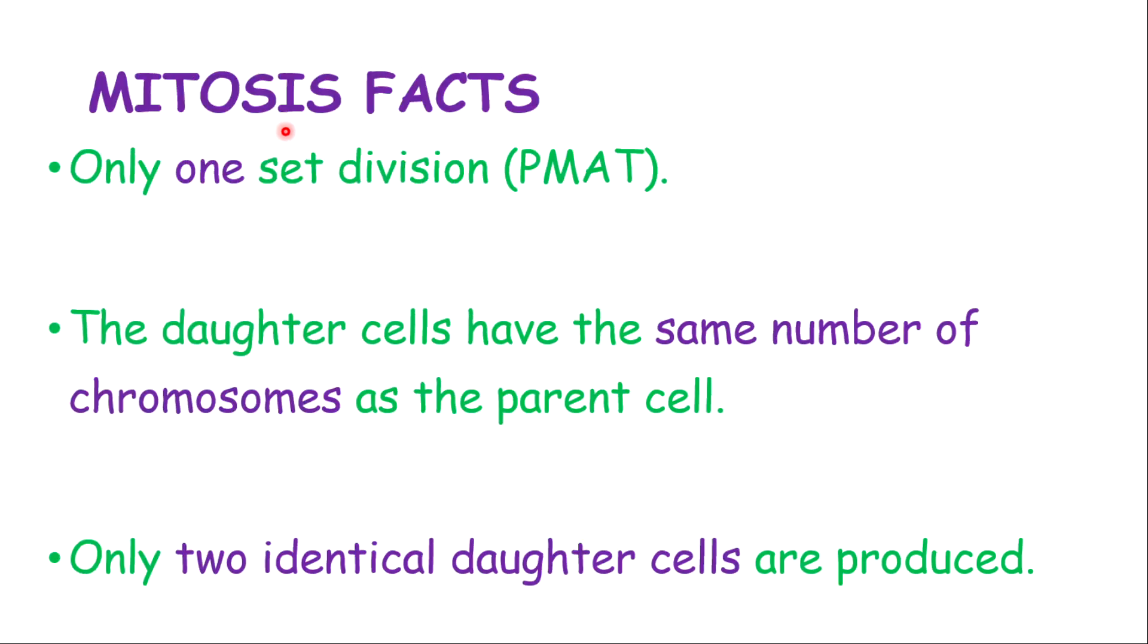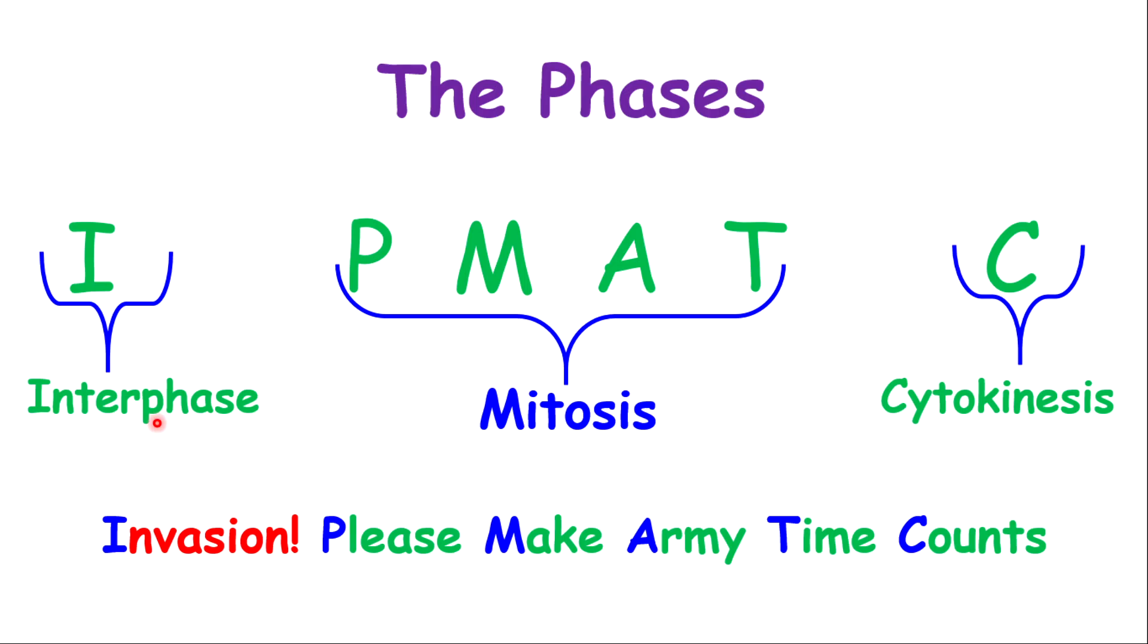There are some facts about mitosis that you need to remember. In mitosis, there's only one cell division known as P-MAT, and that's a nuclear division. The daughter cells have the same number of chromosomes as the parent cells and also to themselves. Only two identical daughter cells are produced. The phases of mitosis are P-MAT.